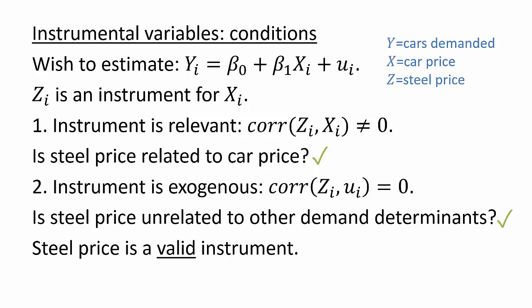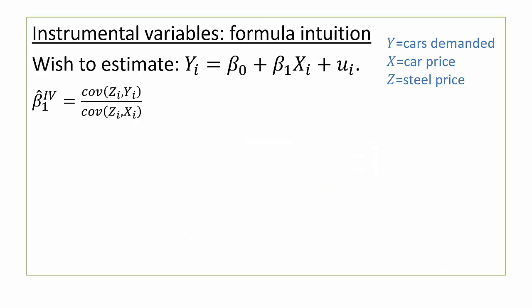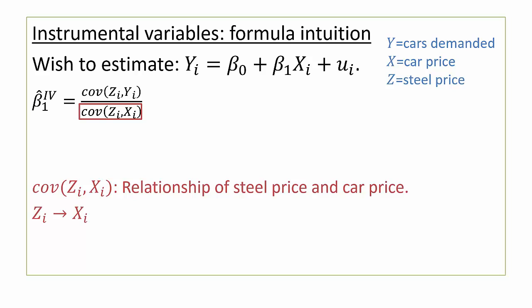This video won't go into detail on the reasons why this formula works, but let's conclude with some intuition. Start with the denominator, the covariance of z and x. Covariance tells us something about the relationship between these two variables, steel price and car price. Why would these two things be related? Because steel prices shift supply, which in turn affect equilibrium prices.